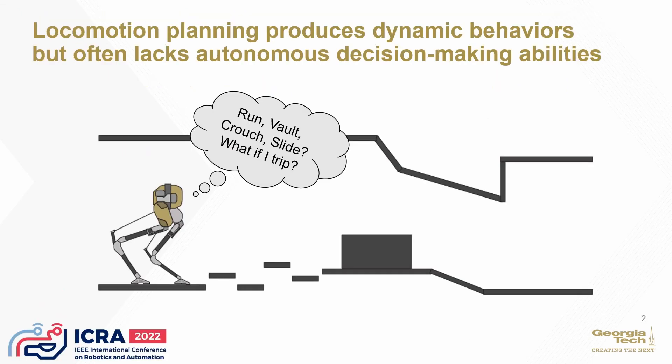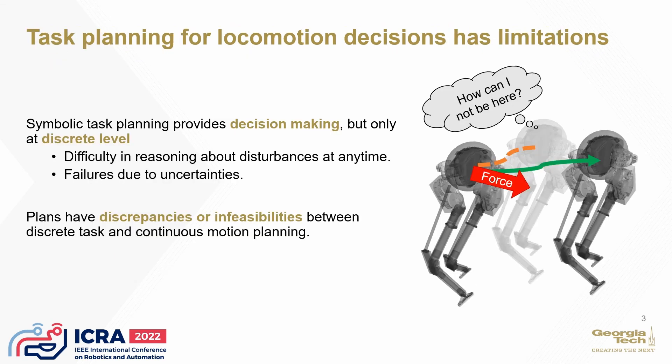Locomotion planning produces dynamic behaviors but often lacks decision-making abilities, especially in complex environments such as rough terrain or under perturbation. Task planning is a powerful technique for decision-making and planning, but it is difficult to reason about continuous domains and thus is not flexible to disturbances or discrepancies.